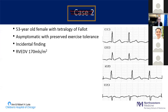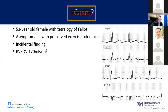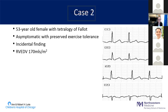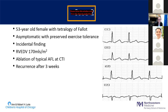Case two: a 53-year-old female with Tetralogy of Fallot who presented to clinic and was found to have an EKG consistent with atrial flutter. She was asymptomatic with preserved exercise tolerance and her right ventricular end-diastolic volume was large, about 170 mLs — we usually use a cutoff of 160 as sort of the larger range. She came to the lab after her diagnosis of atrial flutter and had ablation of typical atrial flutter at the CTI, but unfortunately had recurrence about a month later when she came for her follow-up visit.